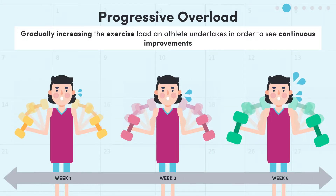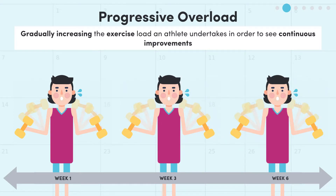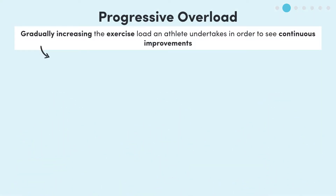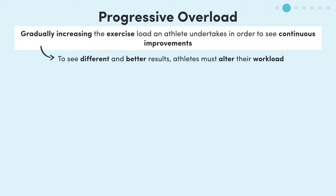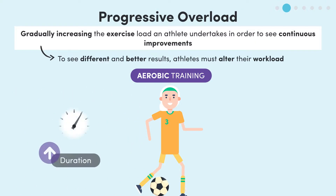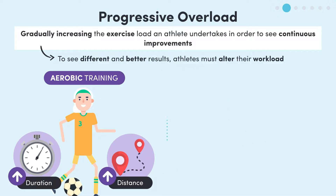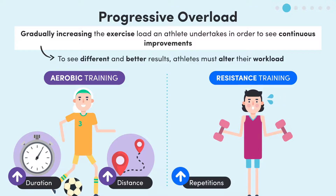Our bodies are incredible things — they adapt very quickly. If the frequency and intensity of training an athlete does remains constant, their body will catch up to this workload and halt any further adaptations. So in order to see different and better results, athletes must alter their workload. For aerobic training, this might mean an increase in duration or distance of training, whereas for resistance training, this might mean higher reps or an increased weight.